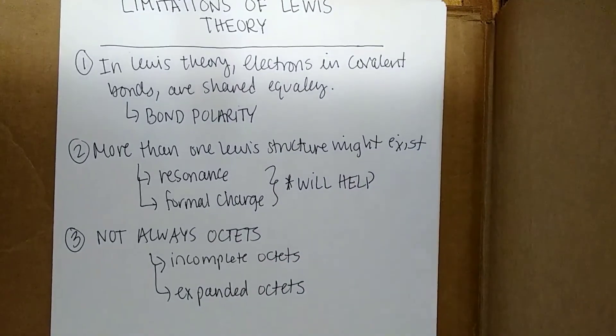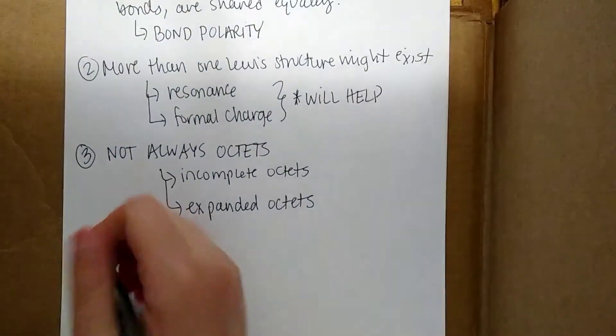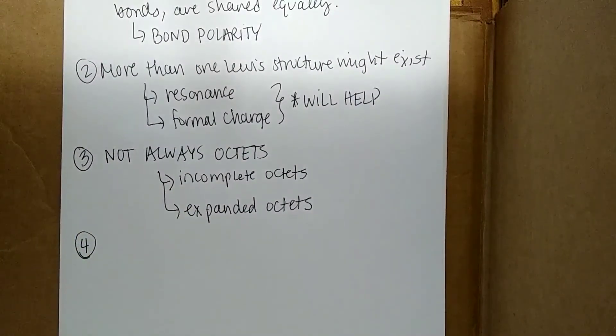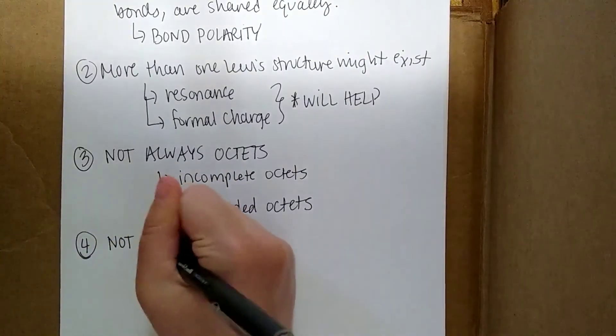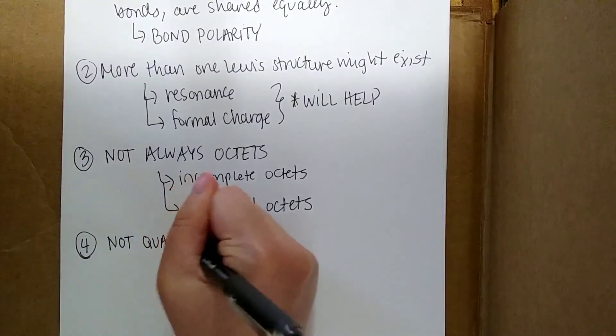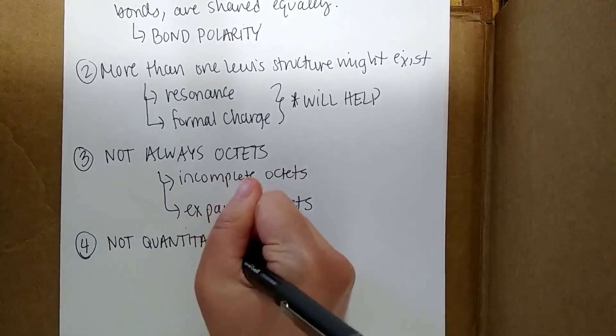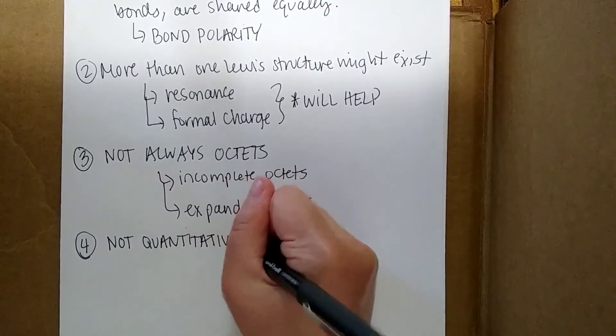And then finally, another limitation is the type of information we can get from Lewis theory. There's actually no quantitative info given. It's all pretty qualitative, meaning you can't really get any numbers from it. And there's no quantum mechanical effects or detailed information about the electrons. So to account for that, we would need a more complicated model, which we're actually going to talk about in the next chapter.